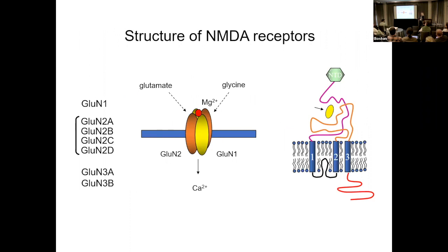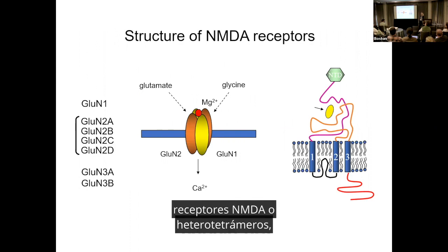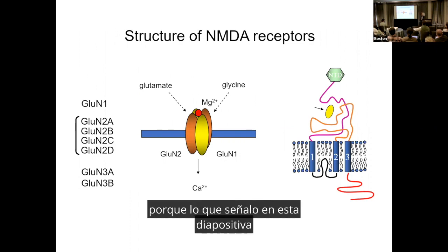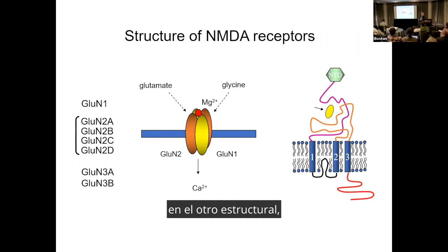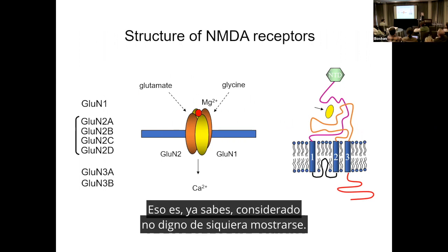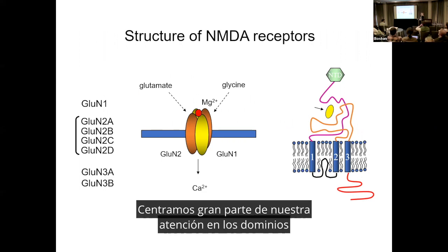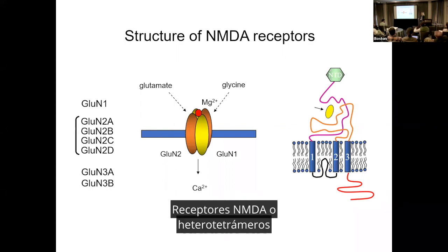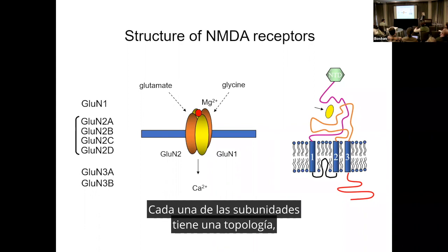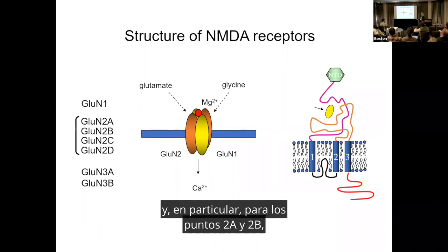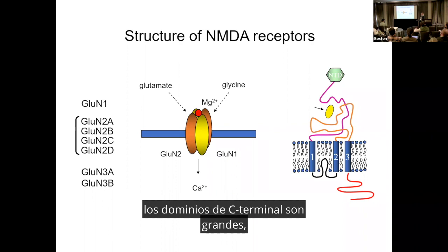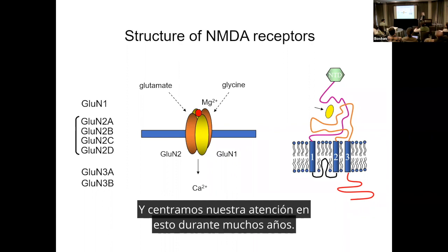Everyone at this meeting knows that NMDA receptors are heterotetramers. I still want to show this slide because what I point out is this thing here that's often lopped off in other structural representations, deemed not worthy of showing. We focus a lot of our attention on the C-terminal domains. Each of the subunits has a topology, and in particular for 2A and 2B, the C-terminal domains are big — about 600 amino acids.